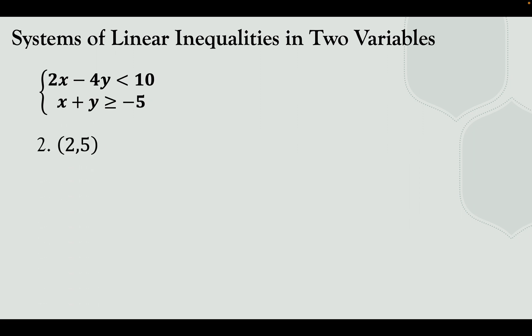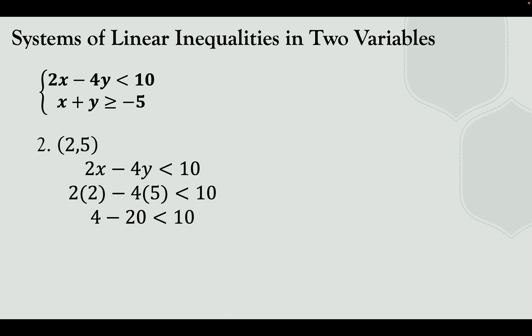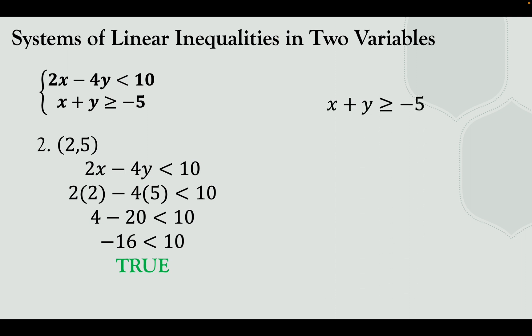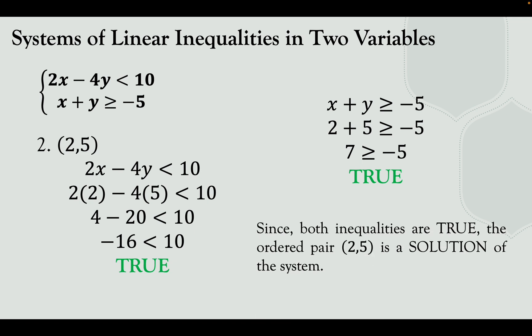Using the same system, let's try the ordered pair 2 and negative 5. For the first inequality: 2 times 2 minus 4 times negative 5 less than 10 gives 4 minus negative 20, which is negative 16. Is negative 16 less than 10? That is true. For the second inequality: 2 plus negative 5 greater than or equal to negative 5 gives negative 3. Is negative 3 greater than or equal to negative 5? Yes, that is true. Since both inequalities are true, the ordered pair 2 and negative 5 is a solution.